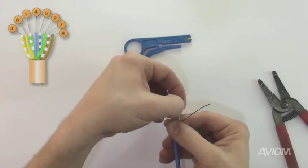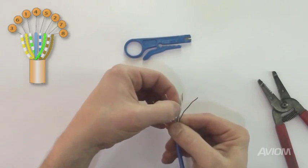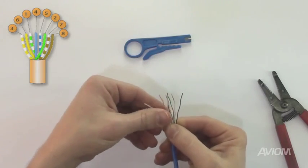Double check to make sure that the wire order is correct. Grip the wires between your thumb and finger and pull the wires together. Make sure that they stay in the proper order.